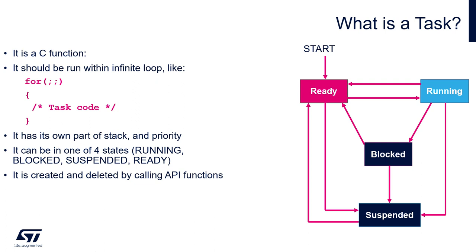Each task can be in one of four states: Ready to be executed, which is the default state after task creation; Run state, meaning currently executing; Blocked state, waiting for some event or delay; and Suspended state, when the task is not active but still present in memory.